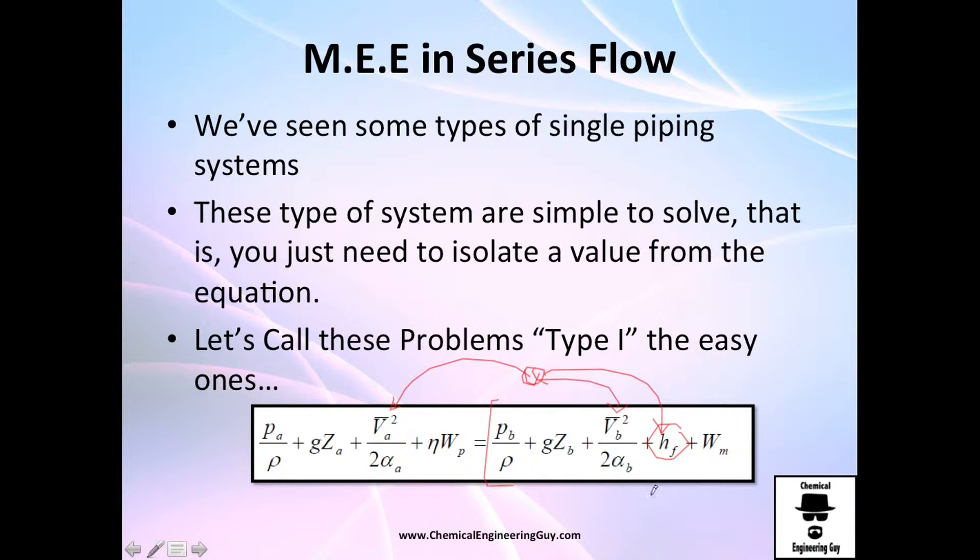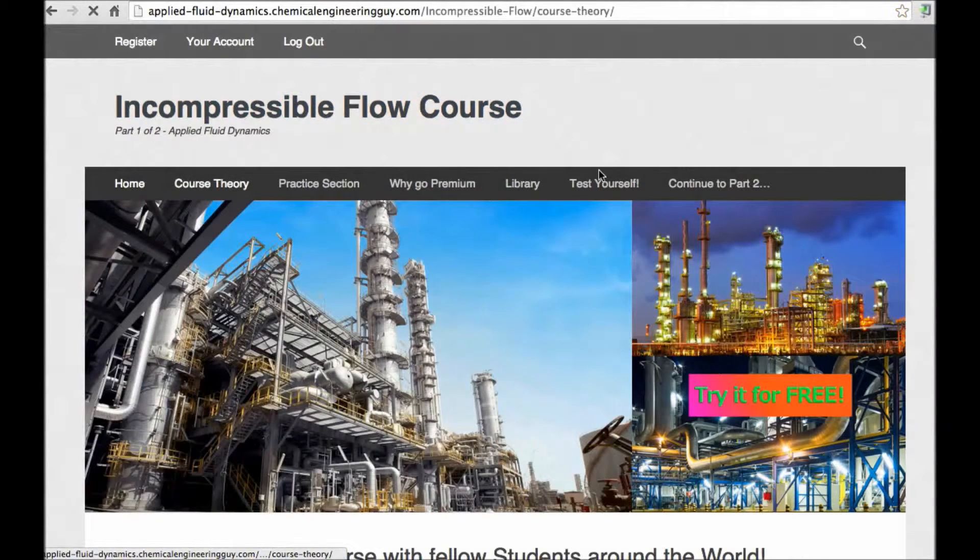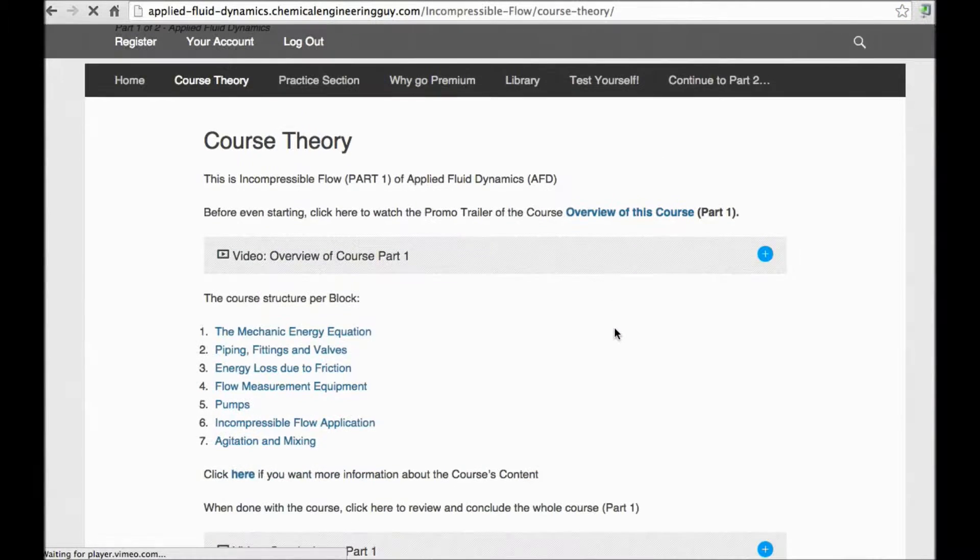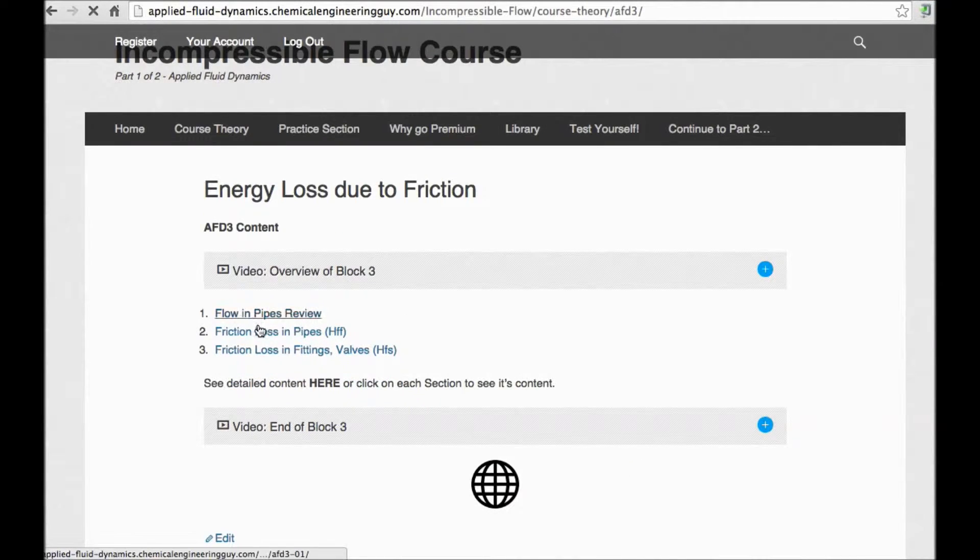Then see if the right side... You want to learn on the friction loss, pressure drops and how to calculate whatever energy loss you have in the system. So for instance, here you can check out in this energy loss due to friction block, you will have a little review on flowing pipes such as Reynolds number, laminar flow, turbulent flow and so on. You will be able to learn how to calculate friction loss in pipes and friction loss due to fittings and valves.